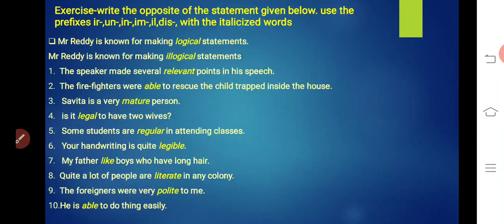Is it legal to have two wives? Legal becomes? Illegal. Is it illegal to have two wives? Some students are regular in attending classes. Some students are regular. What will we call those who are not regular? Irregular. I-R. We will attach I-R in front. Some students are irregular in attending classes. Number six. Your handwriting is quite legible. What is the opposite of legible? Illegible. I-L. Your handwriting is quite illegible.